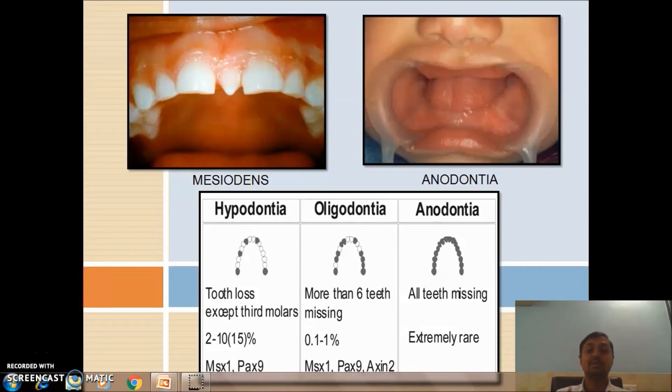What is distomolar? If a supernumerary tooth is present distal to third molar, it is known as distomolar. What is paramolar? Any supernumerary tooth present either buccally or lingually or proximally between first, second, and third molar, it is known as paramolar.